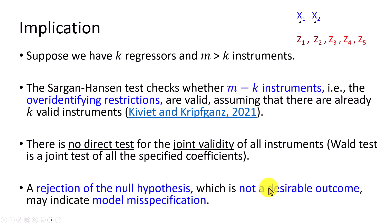So a couple of implications here. Suppose we have k-regressors in the model, in this example 2, and m number of instruments. So in this example, there's 5 of them. The Sargan-Hansen test checks whether the m minus k instruments, which in this case would be 3, 5 minus 2.